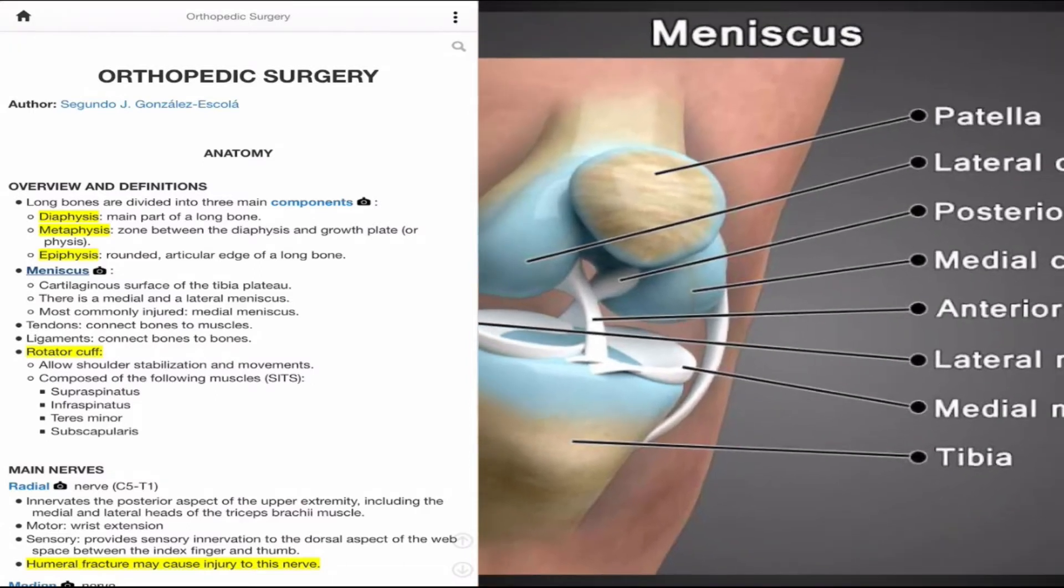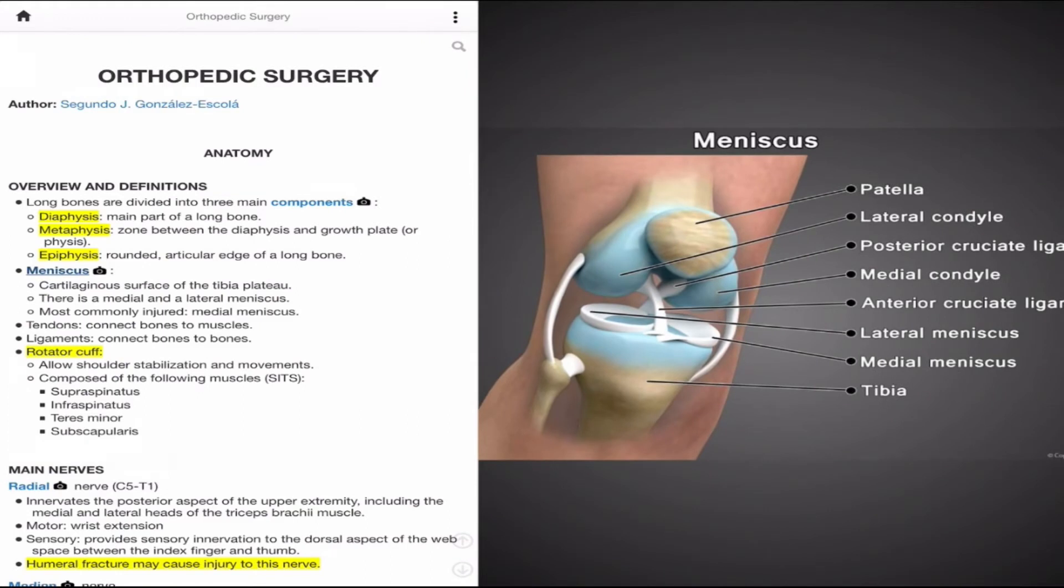To quickly review some terminology here, tendons are structures that connect muscles to bones, whereas ligaments connect bones to bones. An example of this is the MCL, or medial collateral ligament, that we just discussed, which connects and provides support from the medial aspect of the distal femur to the proximal tibia. An example of a tendon would be the quadriceps tendon, which connects the quadriceps muscle to the patella, or kneecap bone.